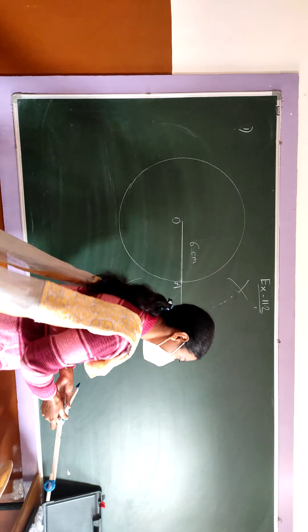Now take the radius MO or MP. Since M is the midpoint of OP, MO equals MP. With M as center and MO as radius, draw a full circle.